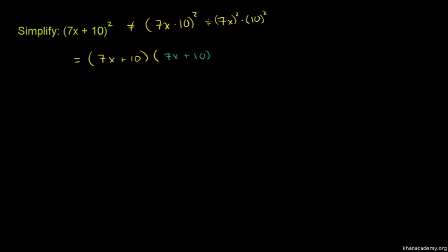To multiply (7x + 10) times (7x + 10), you'll distribute all the terms. We'll multiply each term in the first parentheses by each term in the second.